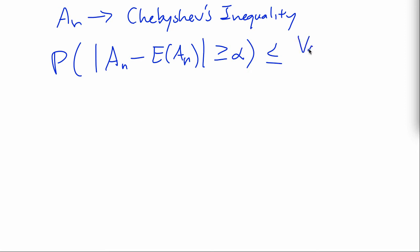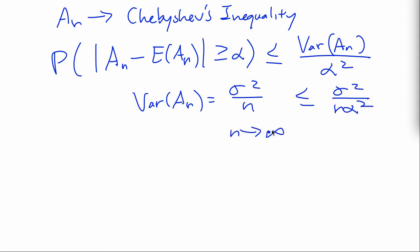the variance of this random variable divided by the distance squared. And we already calculated this variance of An to be sigma squared over n. So, then this right-hand side just becomes sigma squared over n alpha squared. And if we let n go to infinity, which represents our way of taking millions and millions of samples of this random variable up to an infinite amount. So, then this,